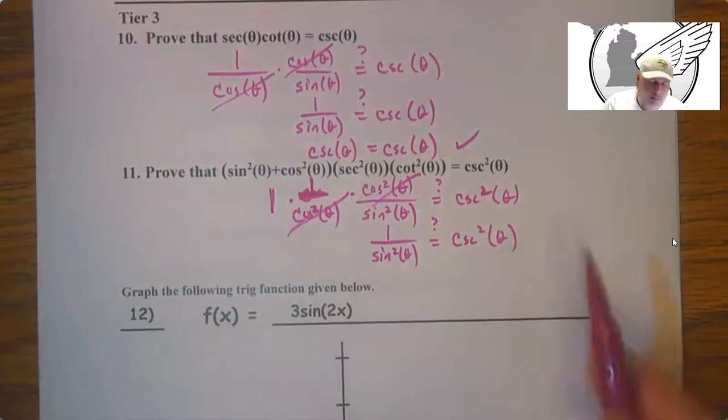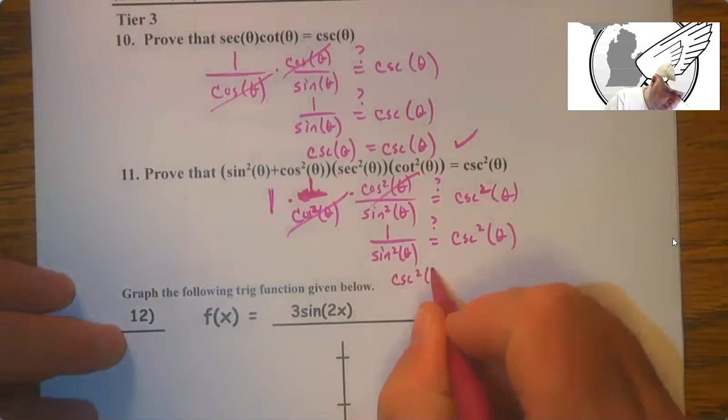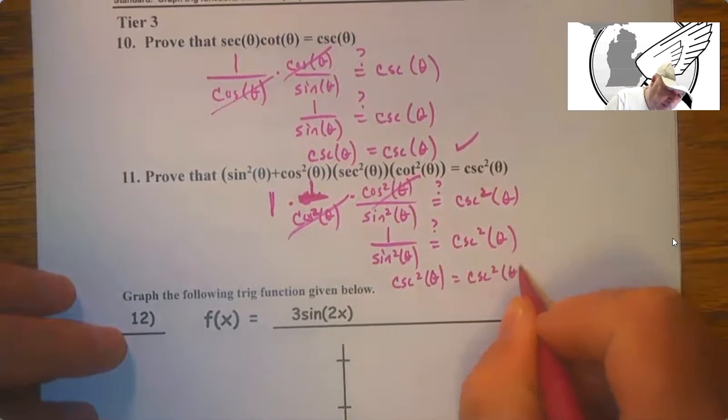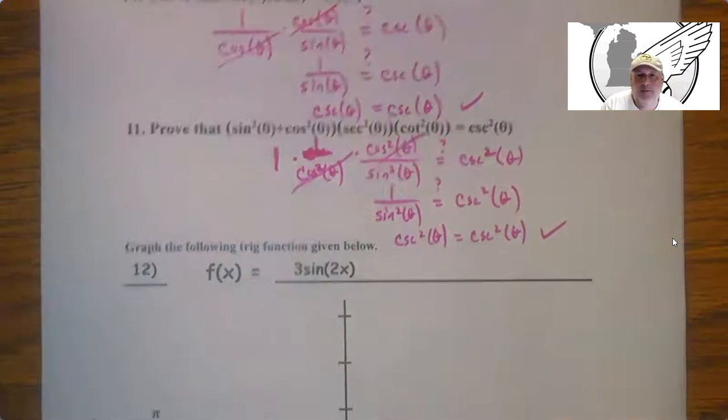So if it was cubed, it would work. If it was to the fourth power, it would work. My writing seems to be awful sloppy these days.